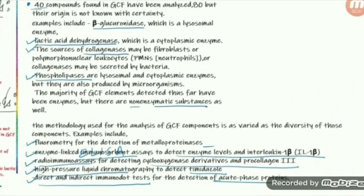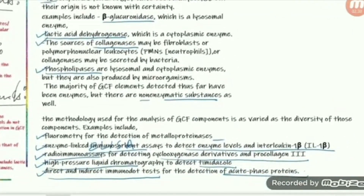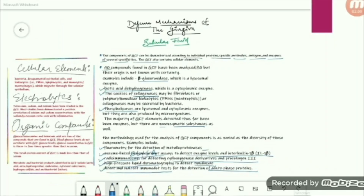The methodology used for the analysis of these components is varied. For the detection of metalloproteins, you use fluorometry. ELISA is used for the detection of enzymatic levels and interleukins, and radioimmune assays, etc. You just need to remember a few of the names.